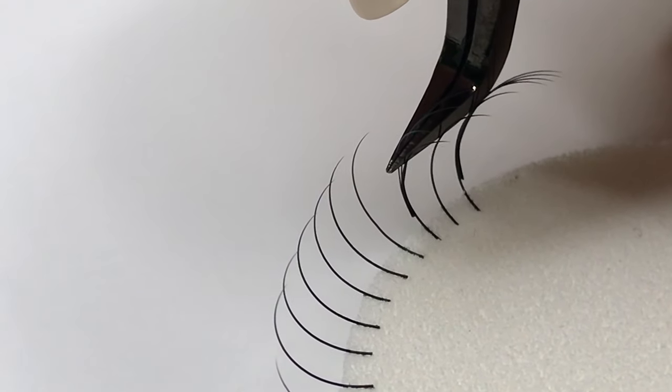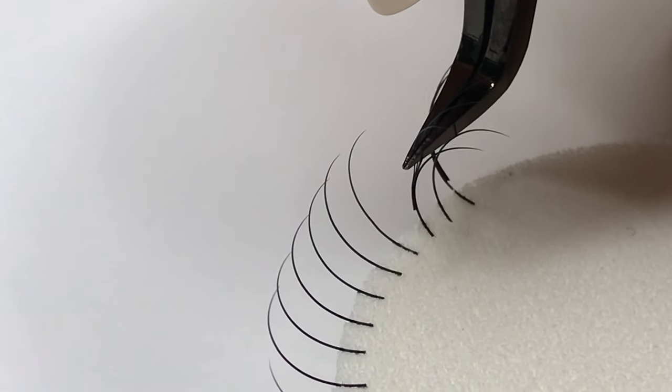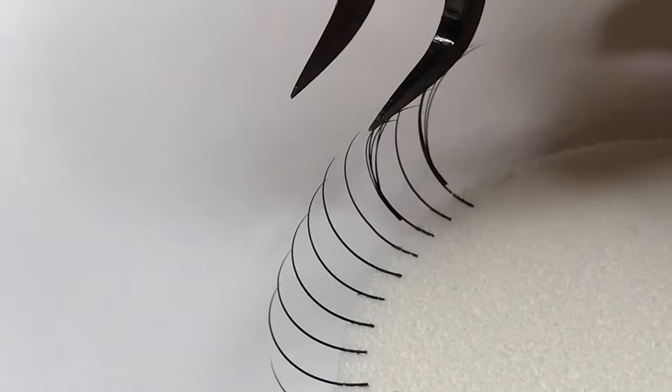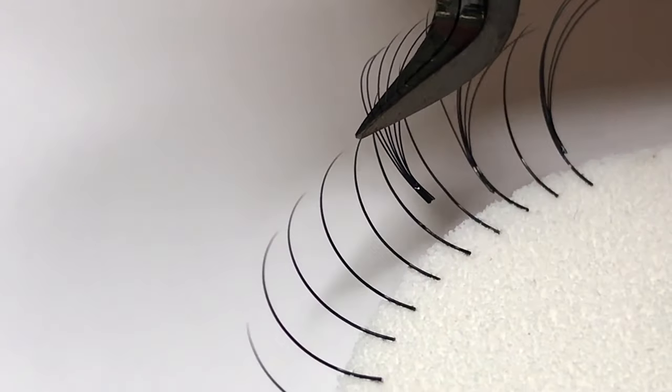For this method focus on using your wrist to angle the base of the extension to match the natural lash and once the base latches on pull towards you until you feel that it's attached securely. Here's another example of attaching a volume fan on top of the natural lash.